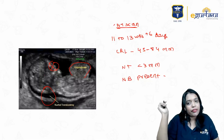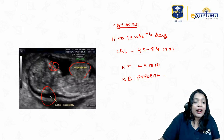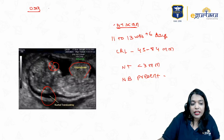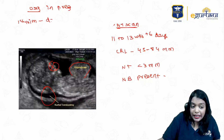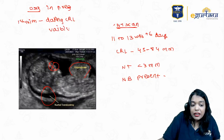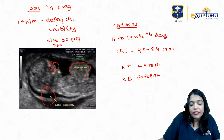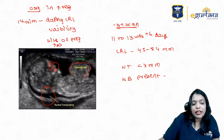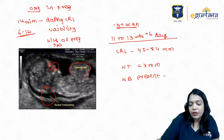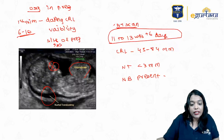Regarding ultrasound scans in pregnancy: in the first trimester, a scan is done which helps with dating the pregnancy using the crown-rump length. It also tells you the viability, site of pregnancy, and any associated conditions. This is usually done between 6 to 10 weeks. Then we have the NT scan, done between 11 to 13 plus 6 weeks, which can tell us about aneuploidies.